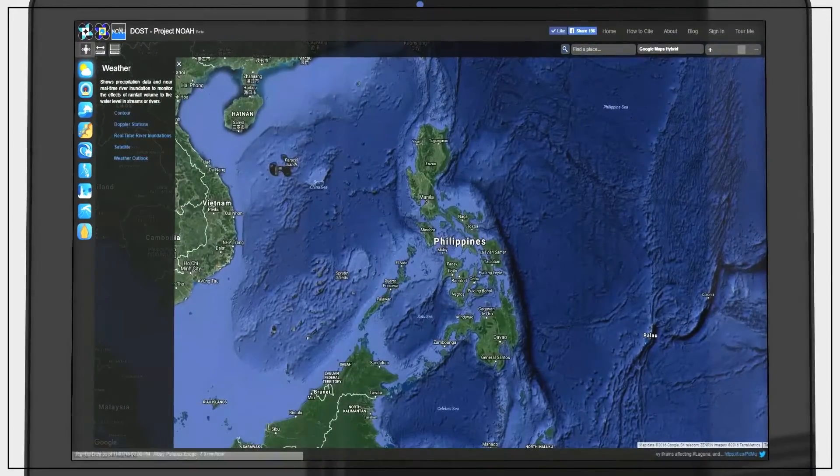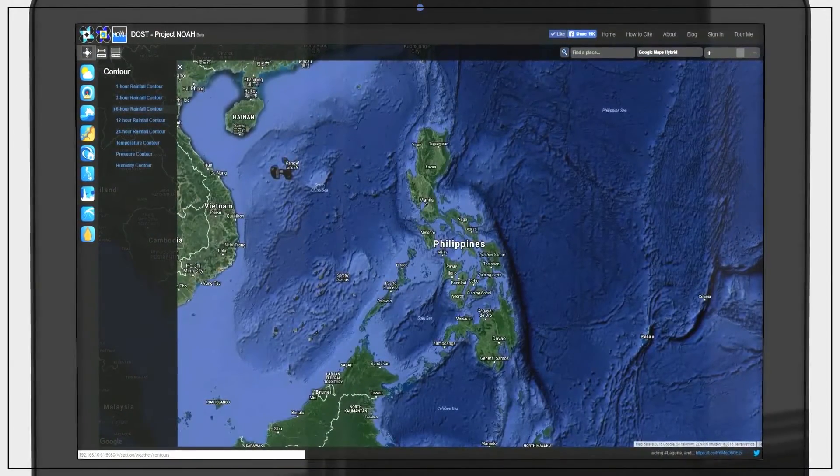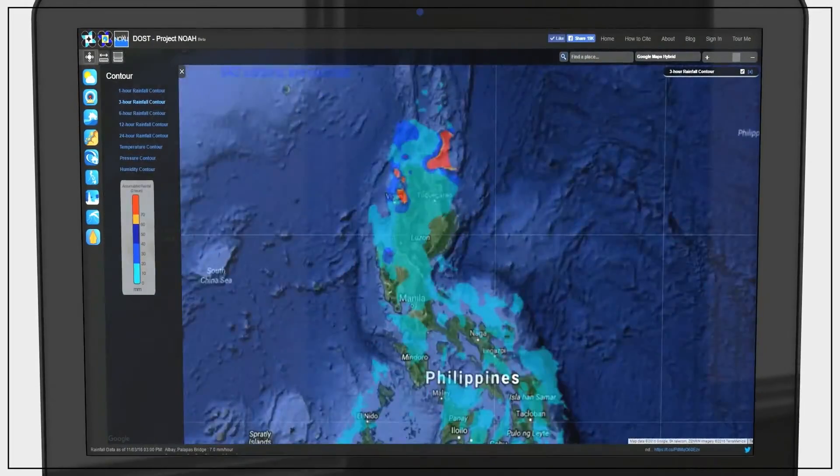In the event of an approaching storm, you can check the amount of rainfall experienced in the country for the past few hours through the rainfall contour.